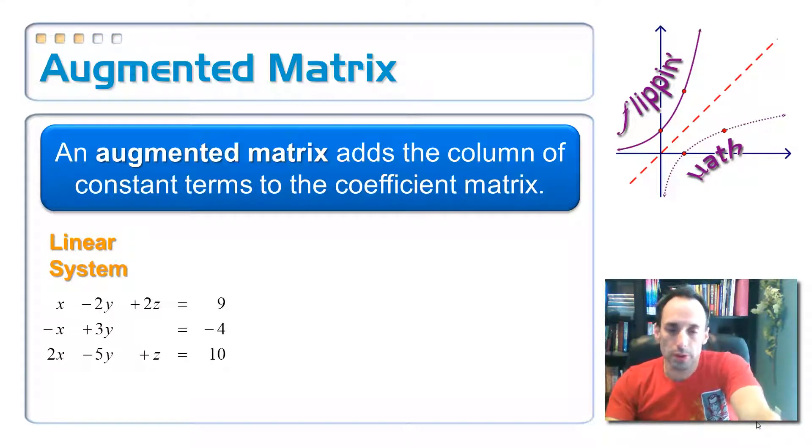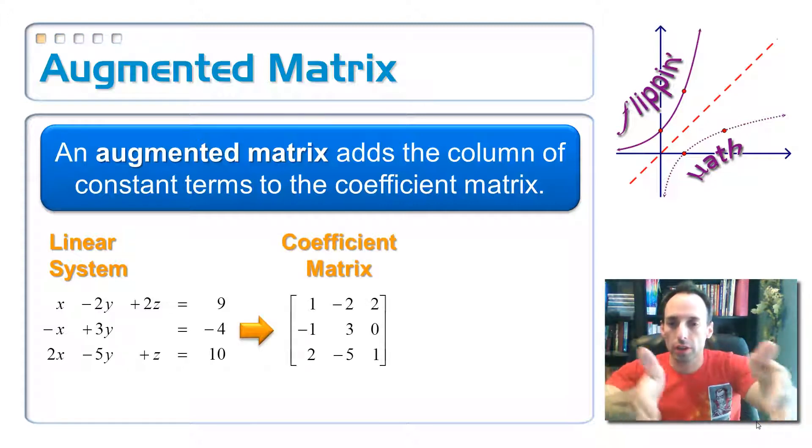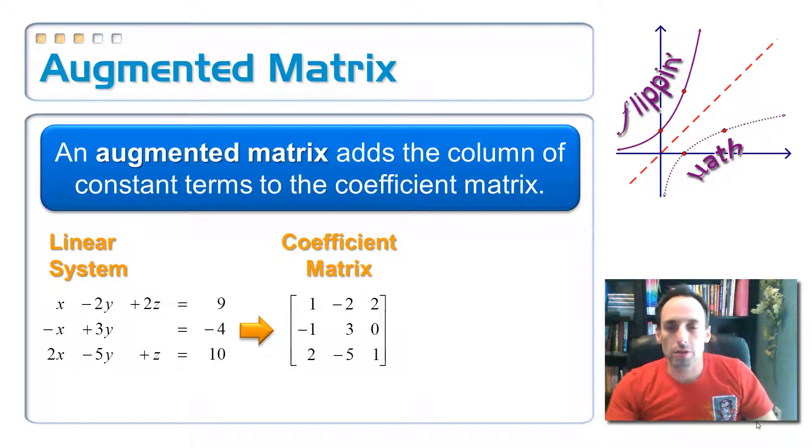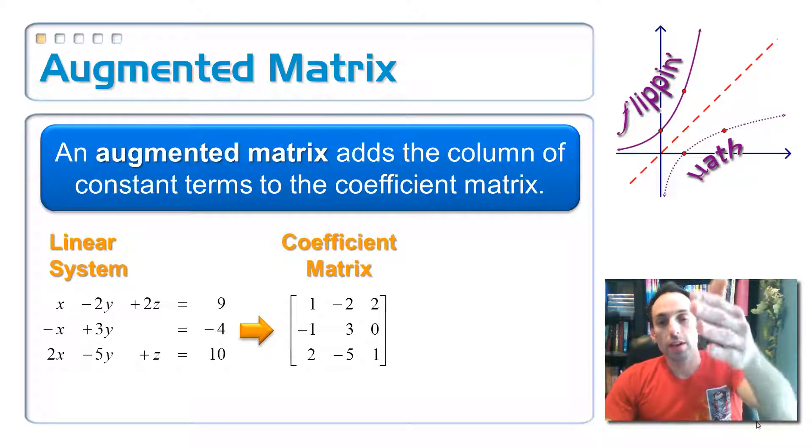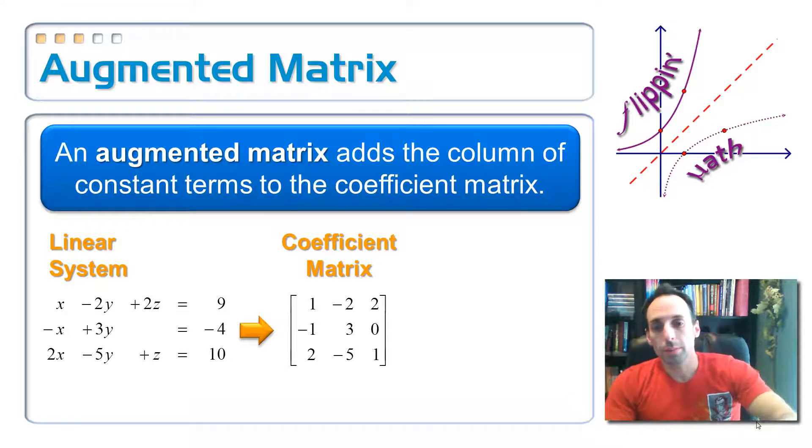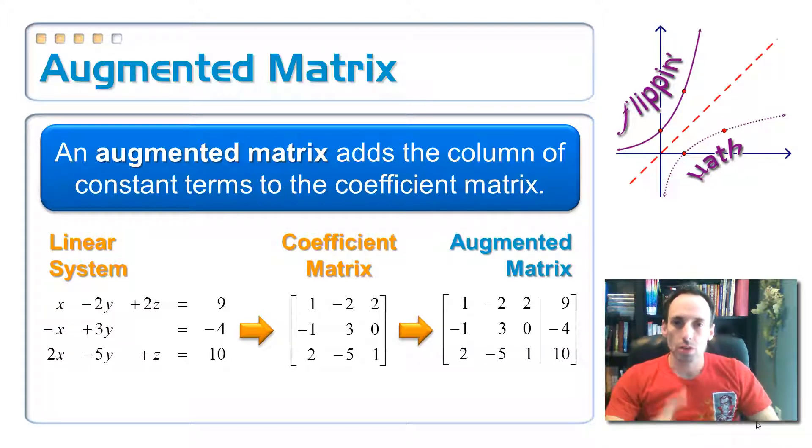We know how to make a coefficient matrix, it's pretty easy. I just take all the coefficients and I put it into a 3 by 3 matrix. Now I can augment that. I can take off the bracket at the end and I can put in the constant terms, the 9, negative 4, and 10, and just make one complete matrix to represent that whole entire system of equations.